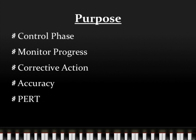When calculating planned durations, accuracy is of the utmost importance. A technique called PERT takes into consideration the optimistic, realistic, and pessimistic durations for any given activity and then calculates a weighted average. This measure will be used in the following examples.